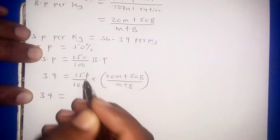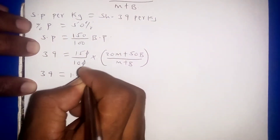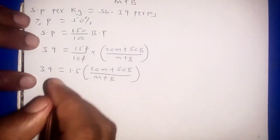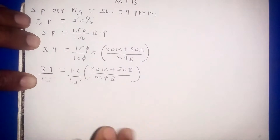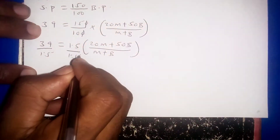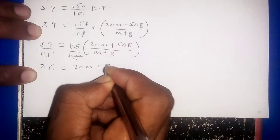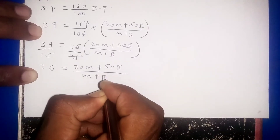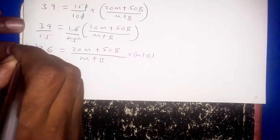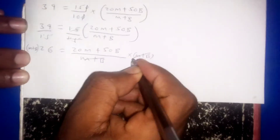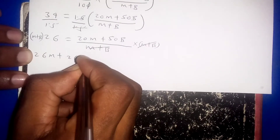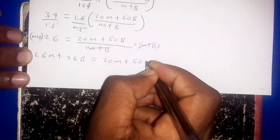Simplifying: 150/100 becomes 1.5, so we have 39 = 1.5 × (20M + 50B)/(M + B). Dividing both sides by 1.5 gives 26 = (20M + 50B)/(M + B). Multiplying both sides by (M + B) to eliminate the fraction and expanding gives 26M + 26B = 20M + 50B.